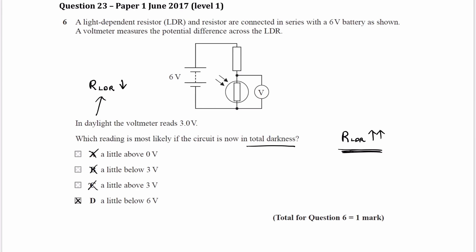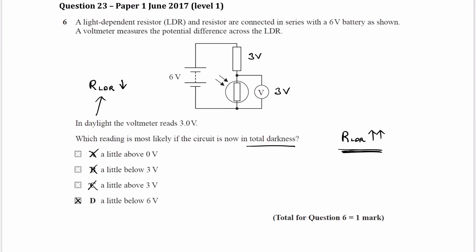To begin with, because we're in daylight, the resistance of the LDR is very low. And if we read 3 volts, that means we are getting 3 volts across the fixed resistor as well, so the resistance of the fixed resistor must also be very low. When we move the circuit to total darkness, if the resistance of the LDR increases significantly and the fixed resistor's resistance remains at that same very low value, then the LDR gets much more voltage than before — so it would be a little bit below 6 volts.